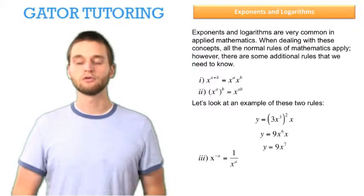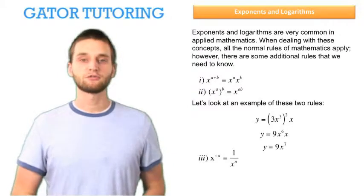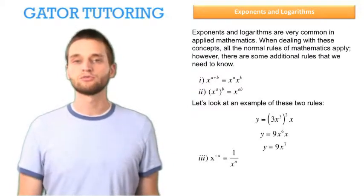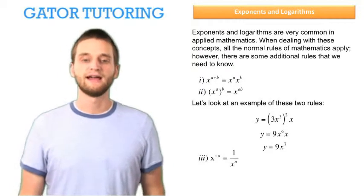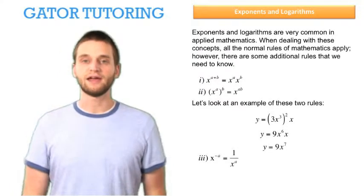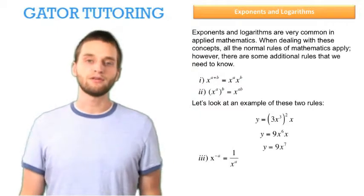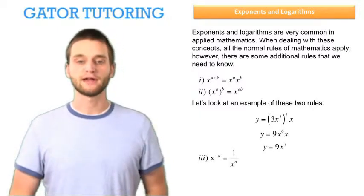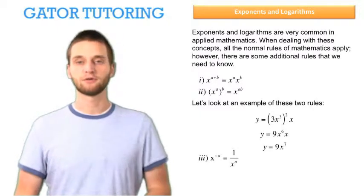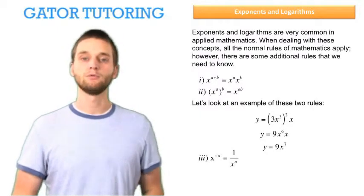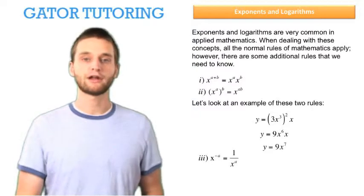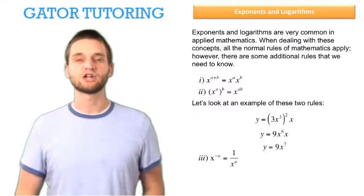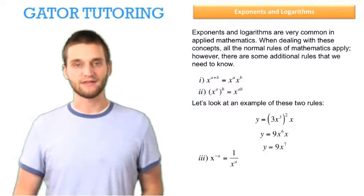The third rule is x raised to the negative a equals 1 over x raised to the a. So basically, if you have a variable that has an exponent and you move it from the numerator to the denominator, you need to change the sign on the exponent.